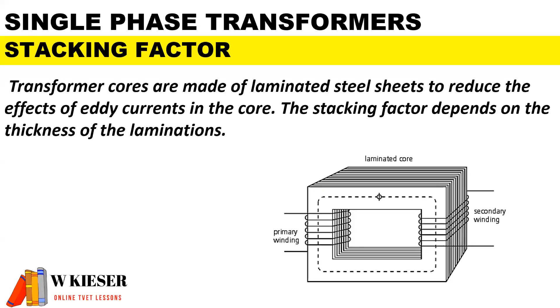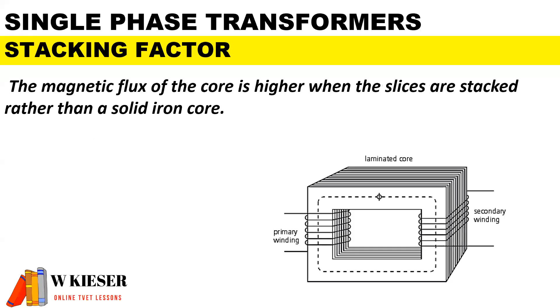Transformer cores are made of laminated steel sheets to reduce the effects of eddy currents in the core. The stacking factor depends on the thickness of the laminations. The magnetic flux of the core is higher when the slices are stacked rather than a solid iron core.